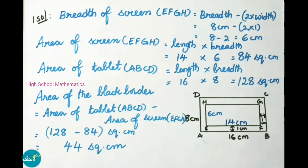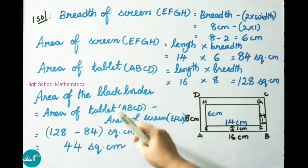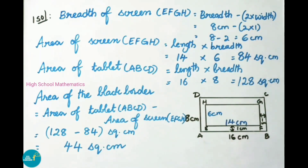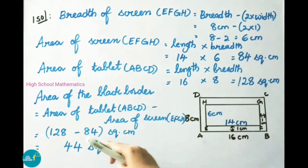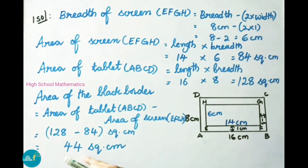To find the area of the black border, we subtract: area of black border equals area of tablet ABCD minus area of screen EFGH, which equals 128 square centimeter minus 84 square centimeter. That is 128 minus 84, giving 44 square centimeter. Therefore the area of the black border is 44 square centimeter.